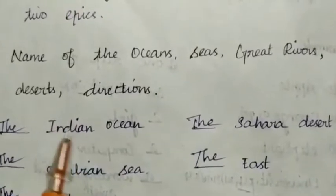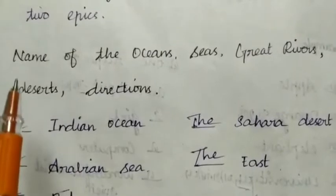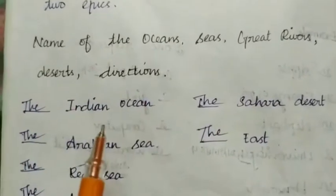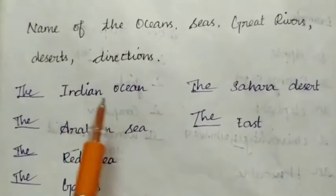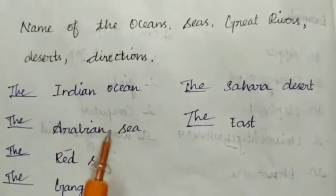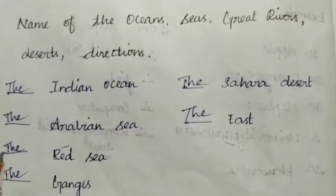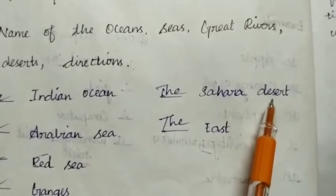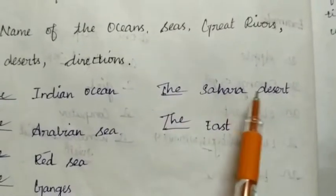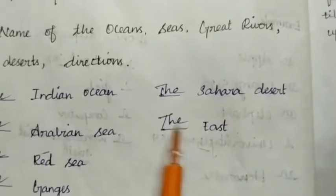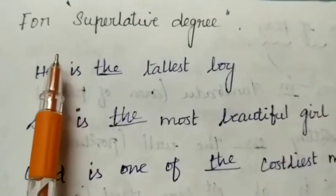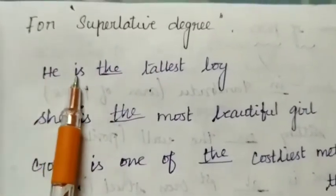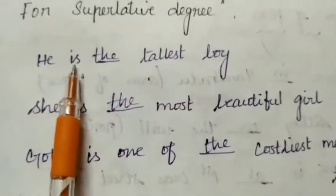We also use 'the' in front of the names of oceans, seas, great rivers, deserts, and directions. For example: 'The Indian Ocean', 'The Arabian Sea', 'The Red Sea', 'The Ganges', 'The Sahara Desert'. Directions also take 'the' — for example, 'the East'.